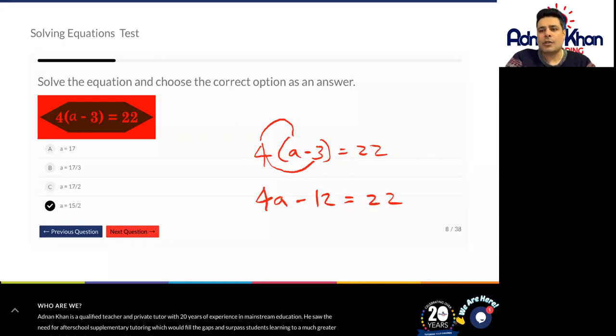Okay, so we need to find what a stands for. Four times what number minus 12 equals 22.